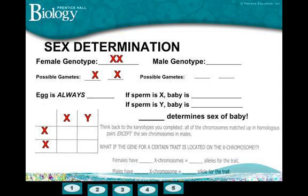The male genotype is X and sex chromosome Y. That means males can produce gametes that are both X or Y. So what we need to remember is that the egg is always X. If the sperm is X, the baby is going to be a girl. If the sperm is Y, the baby is going to be a boy.